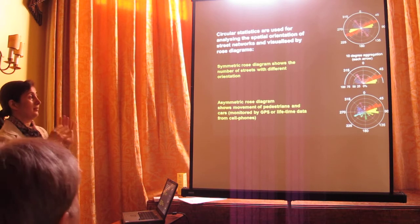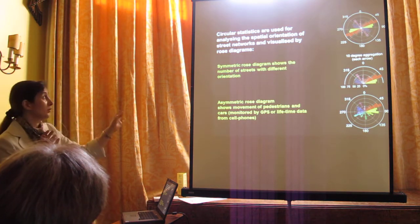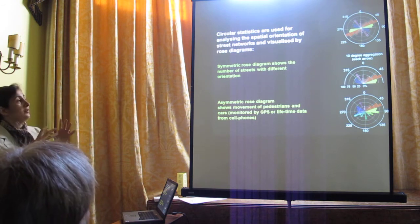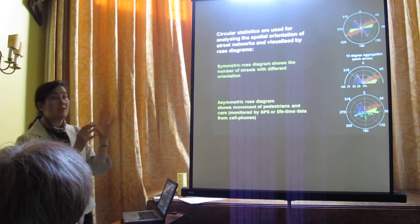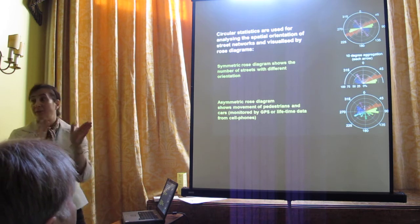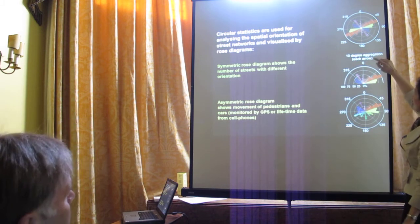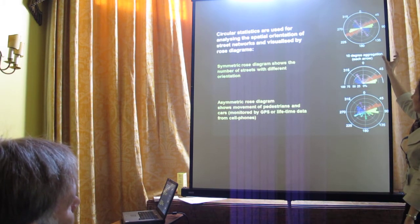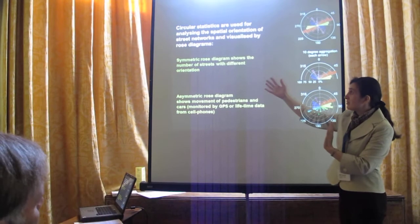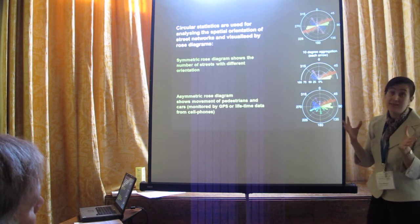Another type of distribution very useful for analyzing the spatial orientation of street networks is circular statistics, which you can visualize through rose diagrams. Rose diagrams are simple tools that show the number of streets in different directions. The main sector shows the trend or orientation of the street, and the length of the sector shows the frequency. We can use this method in two ways: symmetrical and asymmetrical diagrams, depending on different applications.